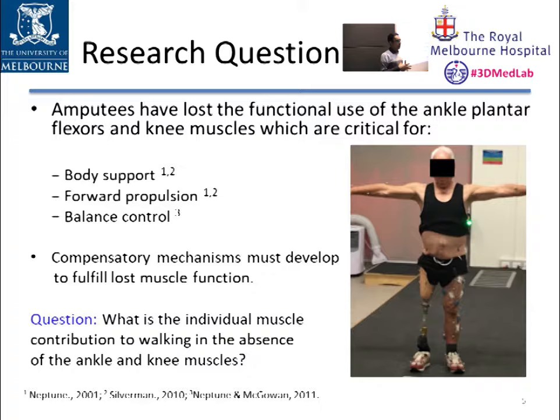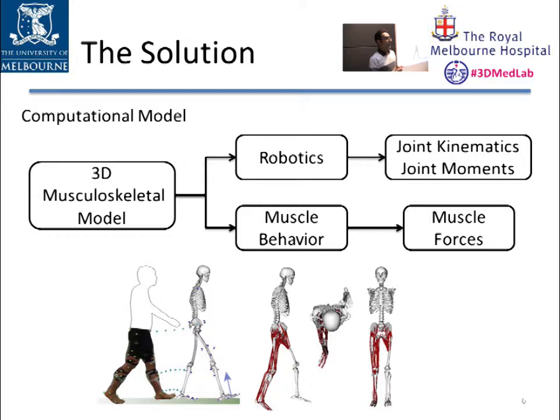So the first question in this project is: what is the individual muscle contribution to body support, forward progression, and balance control during walking among amputees? In order to answer this question, we must use a computational model, because it is impossible to directly measure muscle forces during walking.